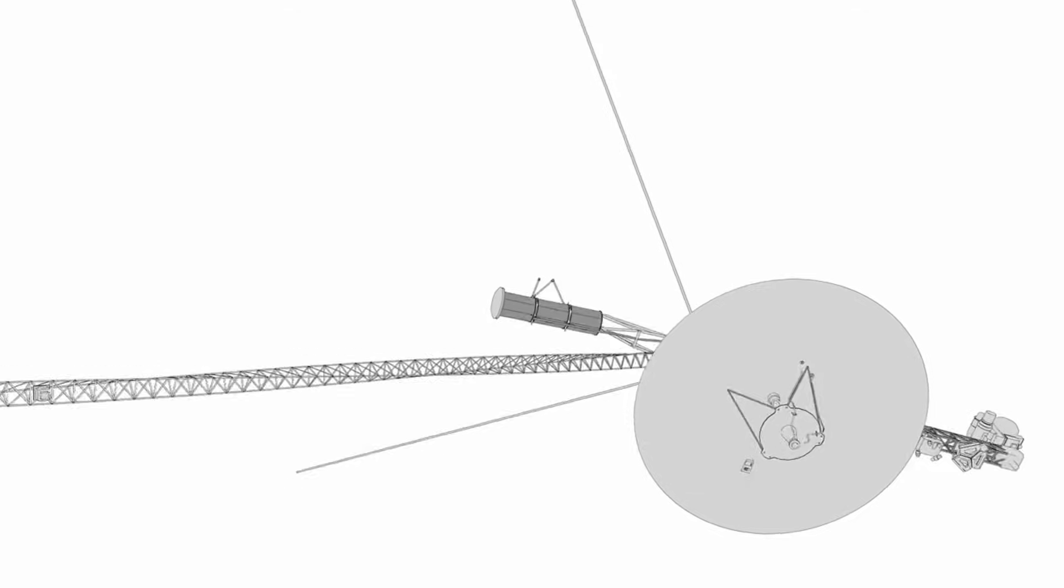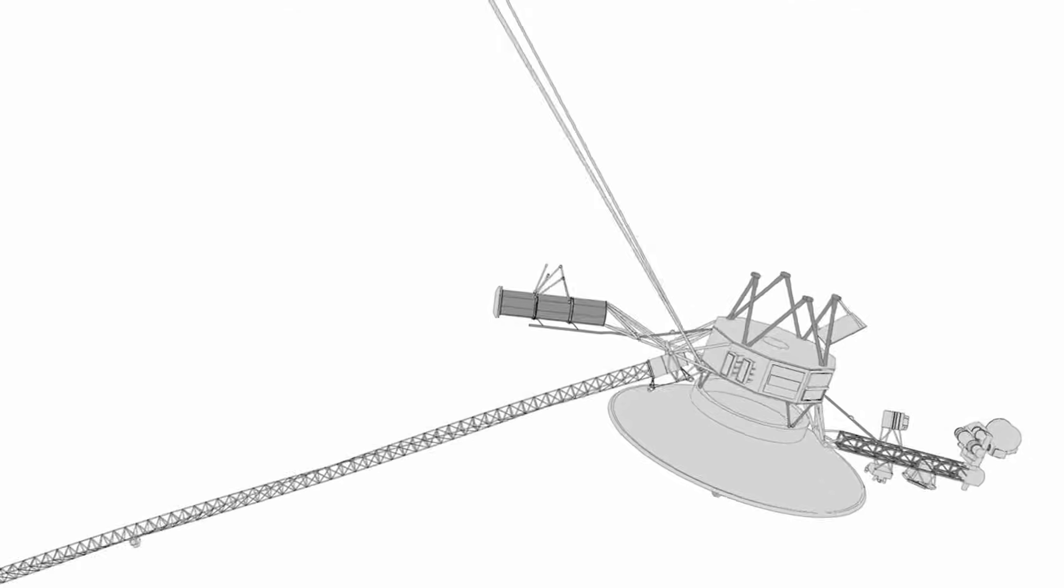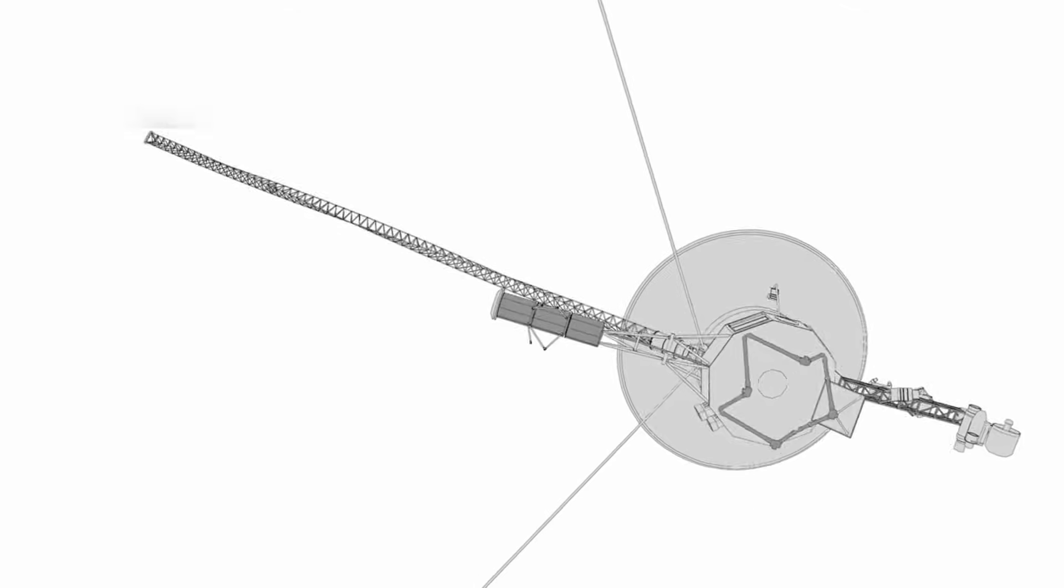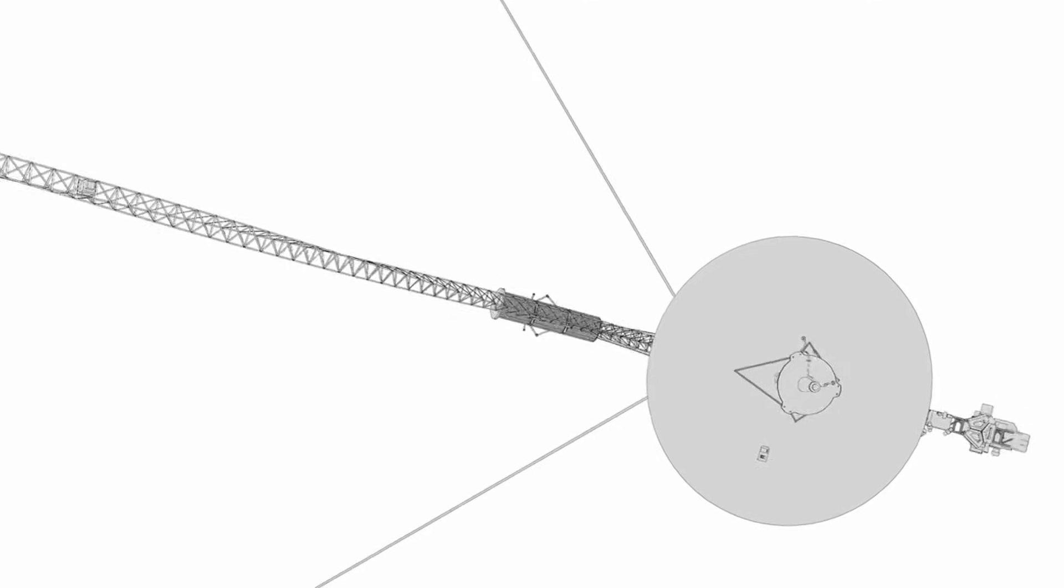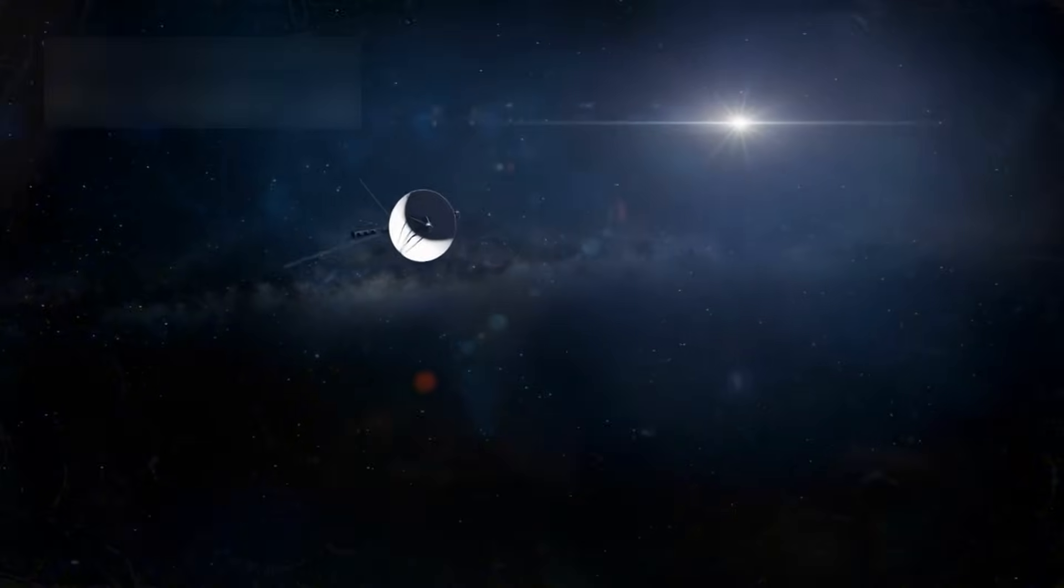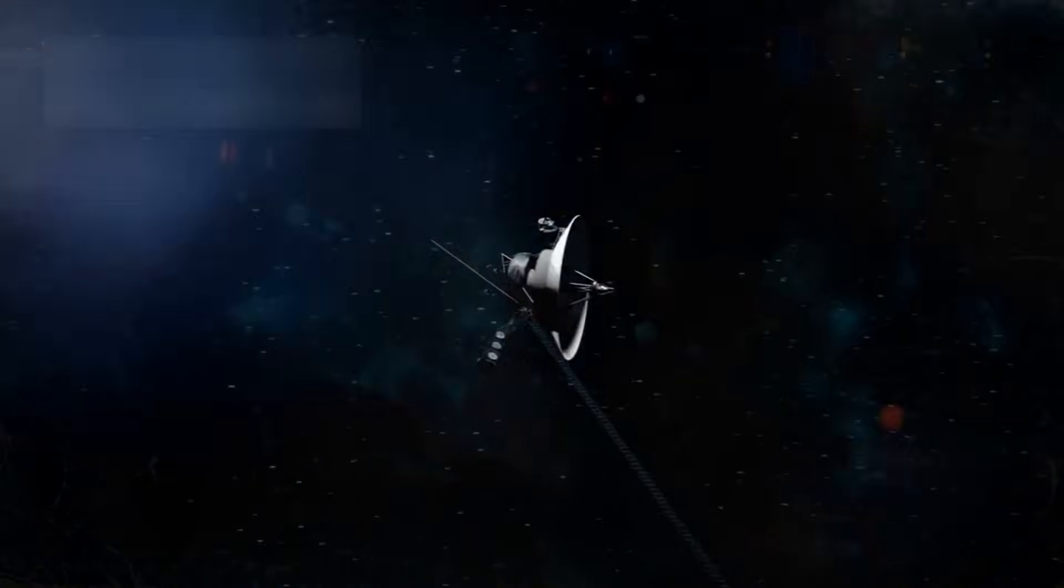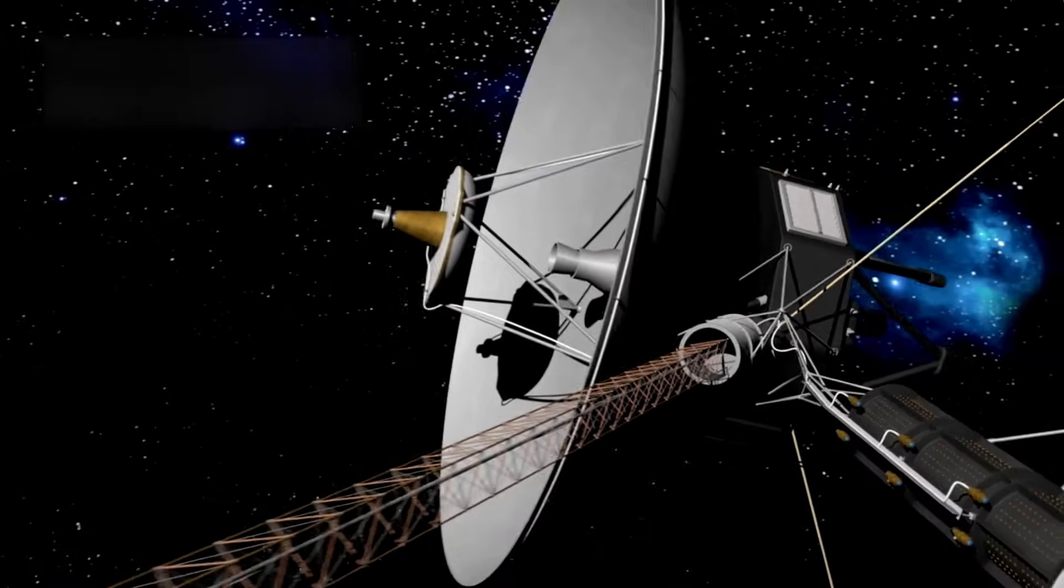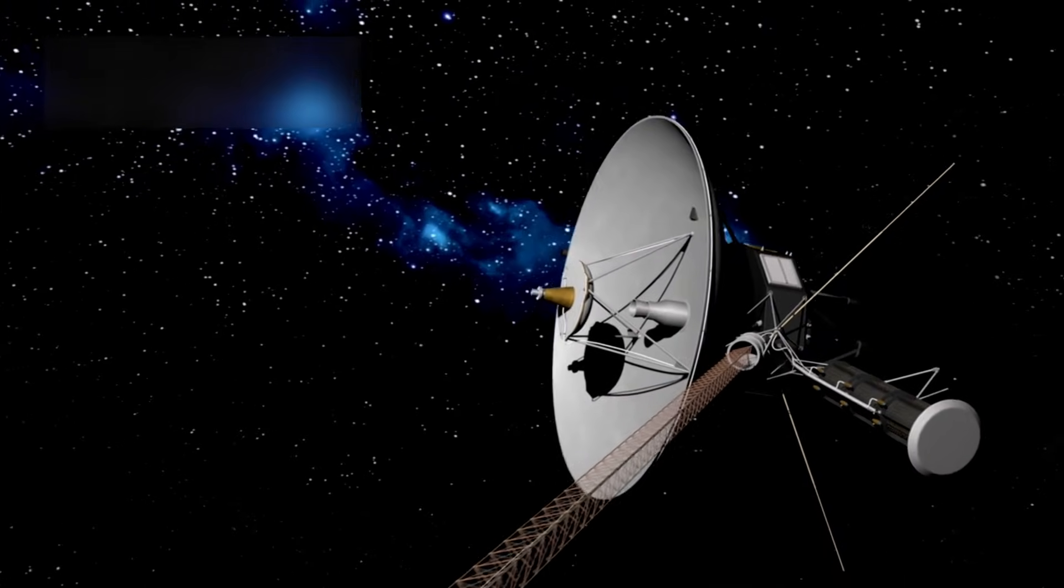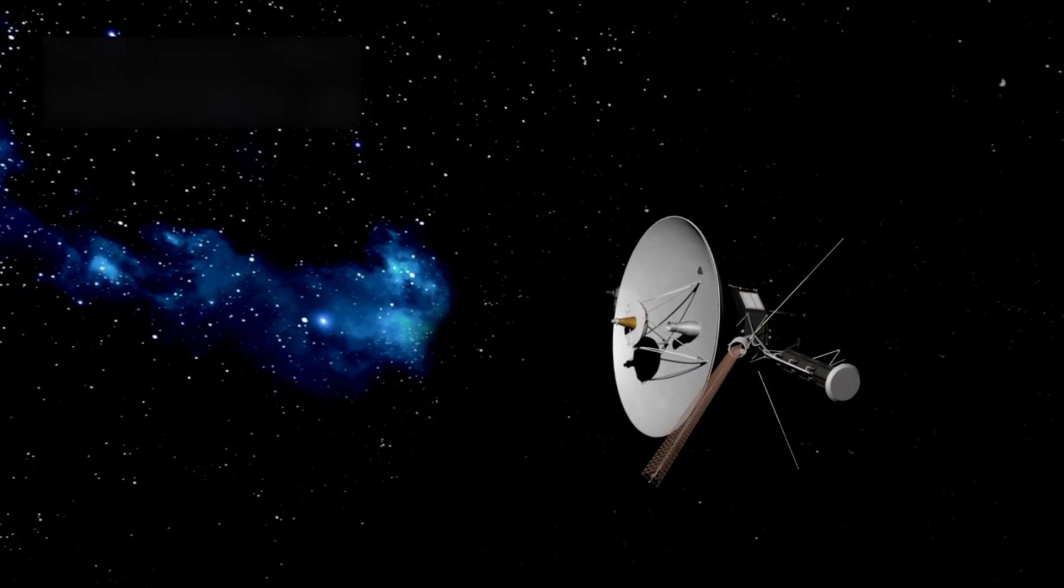As Voyager 1 continues deeper into the unknown, every bit of data it sends helps us get closer to answers about the universe's origin, structure, and future. Scientists are still trying to interpret new data that comes in. Dr. Lisa Kaltenegger, an astronomer at Cornell, said, Voyager is still showing us that space is more active, more strange, and more beautiful than we thought.